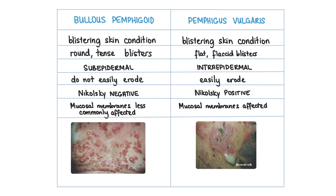Bullous pemphigoid can be differentiated from pemphigus vulgaris, another blistering skin condition, by a few features. Bullous pemphigoid is characterised by round, tense blisters which are less likely to erode as they're sub-epidermal, while pemphigus vulgaris is characterised by flat and flaccid blisters which burst easily as they're intra-epidermal. This difference is known as the Nikolsky sign — patients with bullous pemphigoid will be Nikolsky negative, and patients with pemphigus will be Nikolsky positive, meaning the blisters burst easily when gently rubbed. Remember this as pemphigus positive.